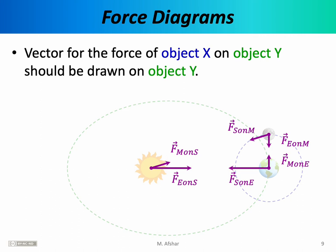Drawing your force diagrams in this way is extremely important because it helps you calculate the net force and identify the action-reaction pairs. For example, the force of Earth on moon and the force of moon on Earth can easily be identified as an action-reaction pair — they point in opposite directions, and their indices show E on M and M on E, exactly matching the pattern of Newton's third law.